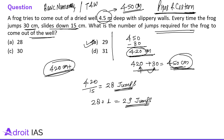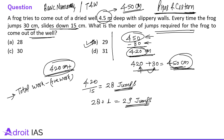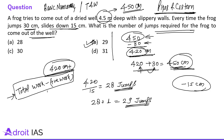In these types of questions, a set approach is used: first subtract the positive work from the total work. Here, the total work is 450 cm, the positive work is 30 cm, and the negative work is 15 cm. So total work minus positive work is the approach for these types of questions. Just start with total work minus positive work.